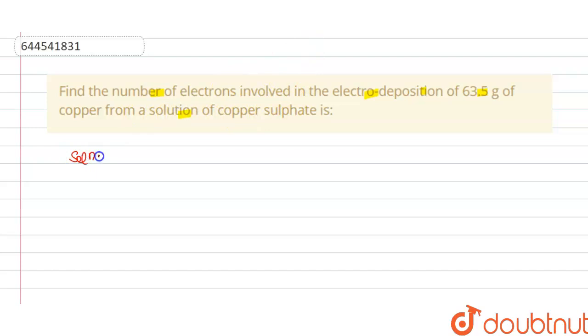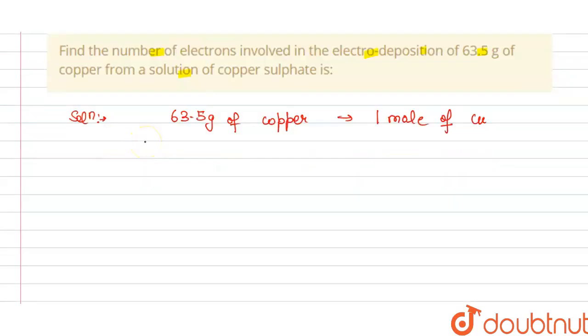So the solution of this question is we have to calculate the number of electrons. Firstly, we have given 63.5 grams of copper. So that is the molar mass of copper. We can say that this is 1 mole of copper.